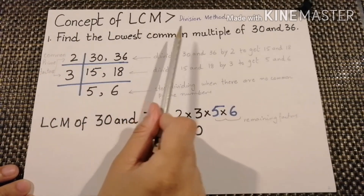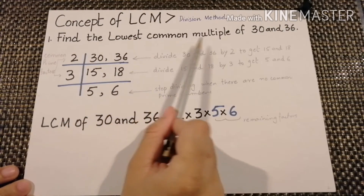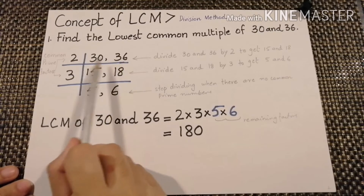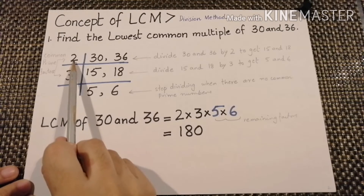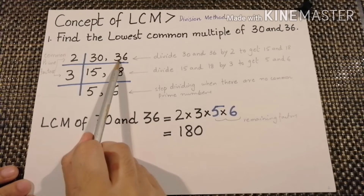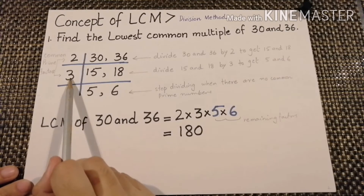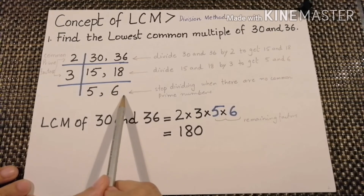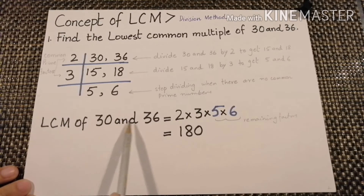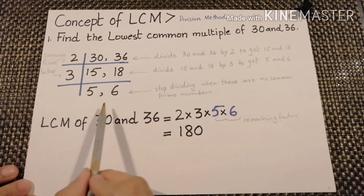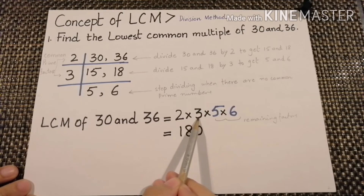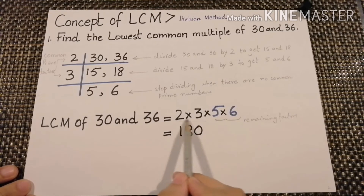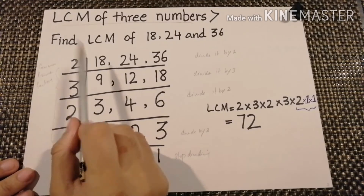Now the concept of LCM by division method. Find the least common multiple of 30 and 36 by the division method. We divide 30 and 36 by 2 — the common prime factor — to get 15 and 18. Again we divide 15 and 18 by 3 to get 5 and 6. We stop dividing because there is no common prime factor. For the LCM of 30 and 36, we write the common prime factors and the remaining factors: 2 multiplied by 3 multiplied by 5 multiplied by 6. When we multiply them, we get the LCM, which is 180.